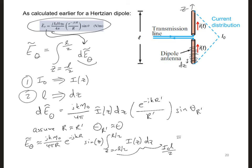So the total far field from the short dipole is j k η_0 I_0 L over 8π r, times e to the minus j k r, times sine θ.